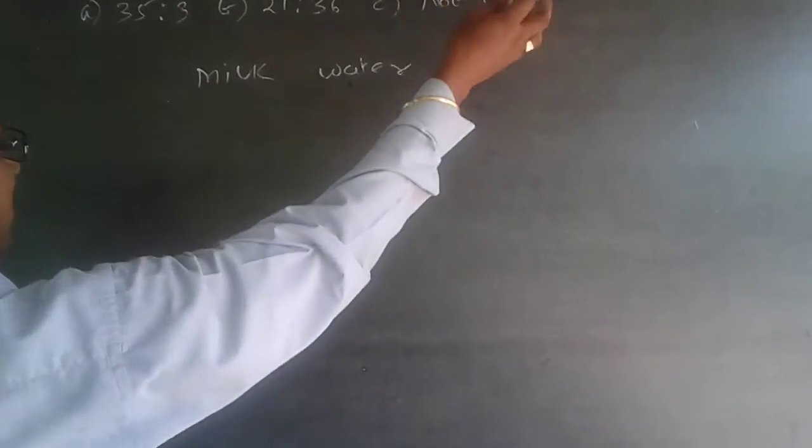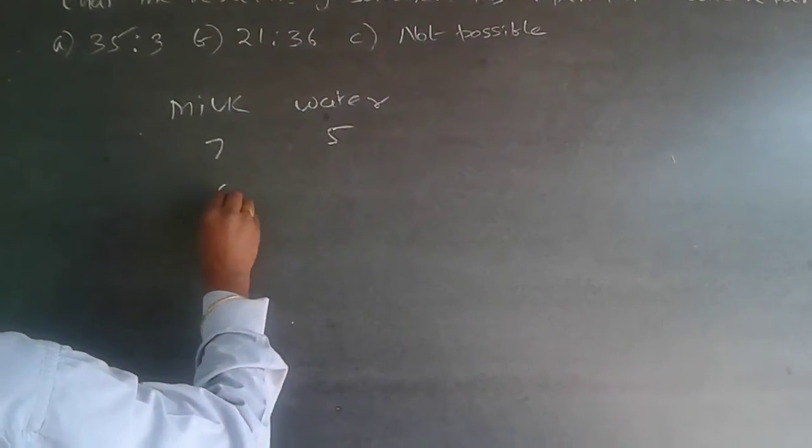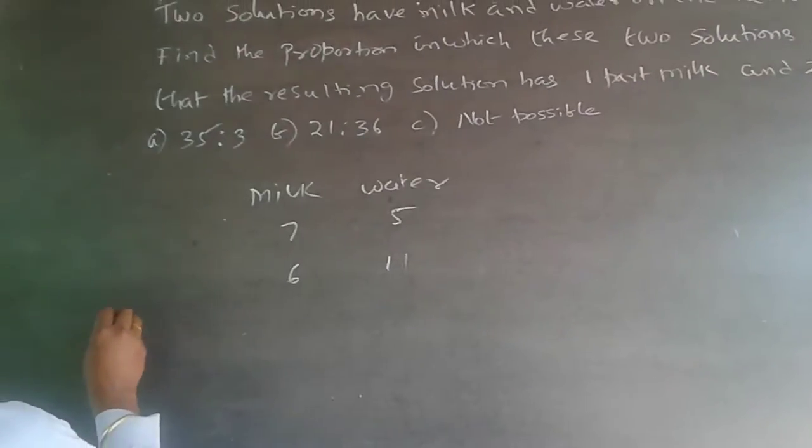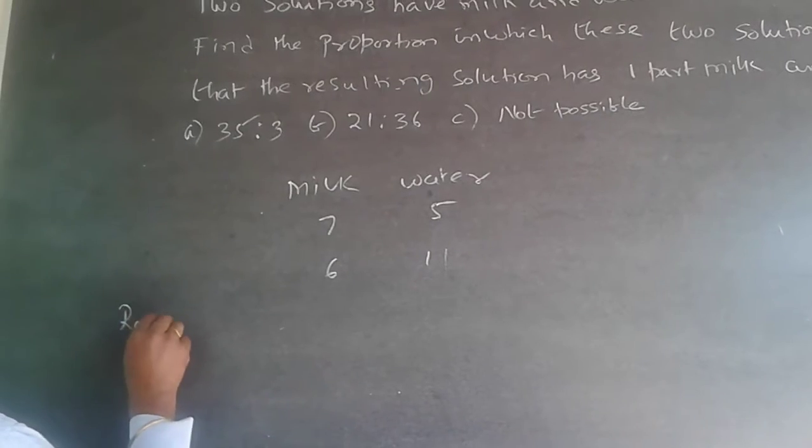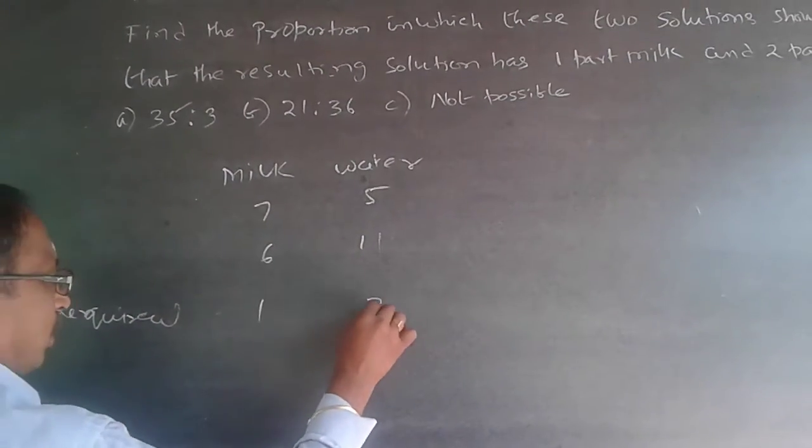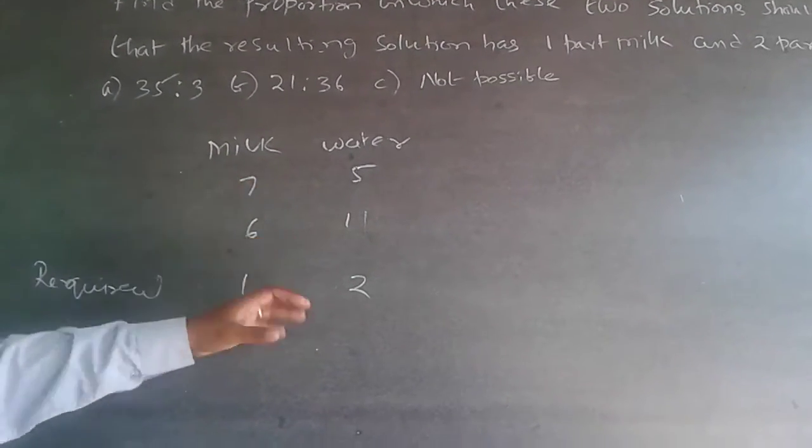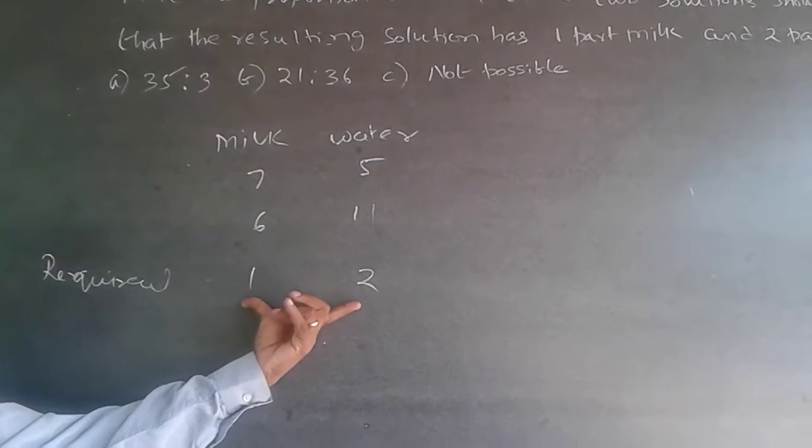So first it is 7 and 5, second it is 6 and 11, and what I want is required is 1 is to 2. I will have to mix these two quantities in such a way that I am able to get 1 is to 2.